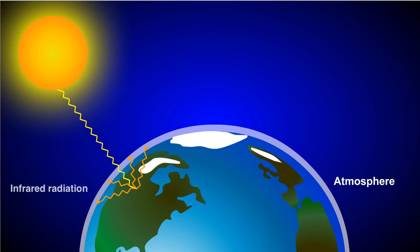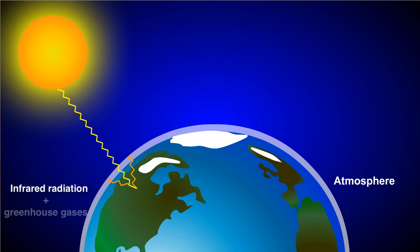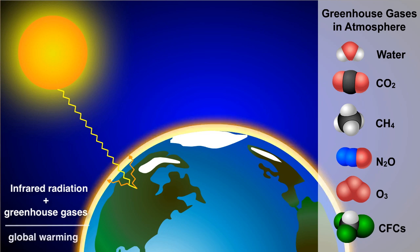This heat from photons, also called infrared radiation, radiates from the surface into the atmosphere. Most of this heat moves through the atmosphere and is lost into space. However, some of the heat interacts with greenhouse gases in the atmosphere, such as carbon dioxide, water vapor, and methane. These molecules absorb the infrared energy and slowly release it back into the atmosphere over time.